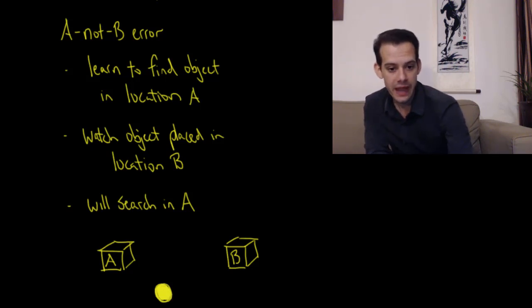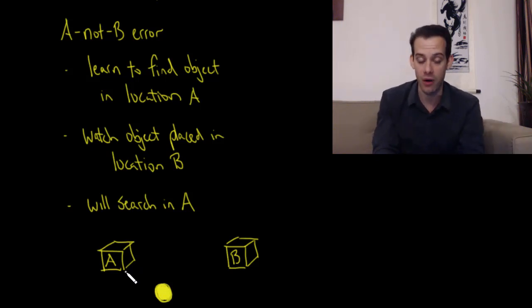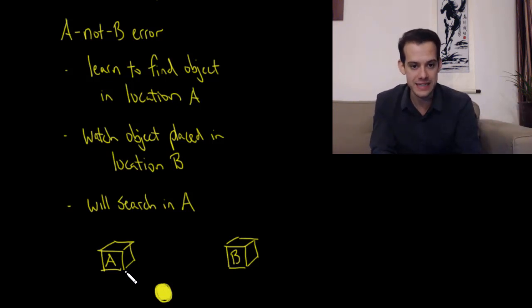You have a ball here and you repeatedly hide it in location A. I keep putting the ball into this box here and the child can't see it when it's in the box, but they watch me place it there and I teach them to reach into the box and get the ball. When I hide the ball in the box they'll reach into A.